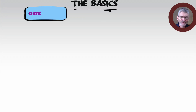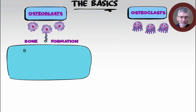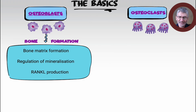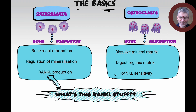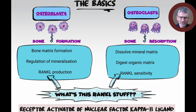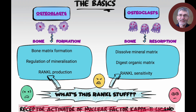Let's have a look at the basics. We have the osteoblasts and the osteoclasts. The osteoblasts are involved with bone formation — bone matrix formation, regulation of mineralization, and RANKL production. The osteoclasts are mainly involved with bone resorption; they dissolve mineral matrix, digest organic matrix, and have RANKL sensitivity. What is this RANKL stuff anyway? It stands for receptor activator of nuclear factor kappa B ligand — let's just remember it as RANKL.